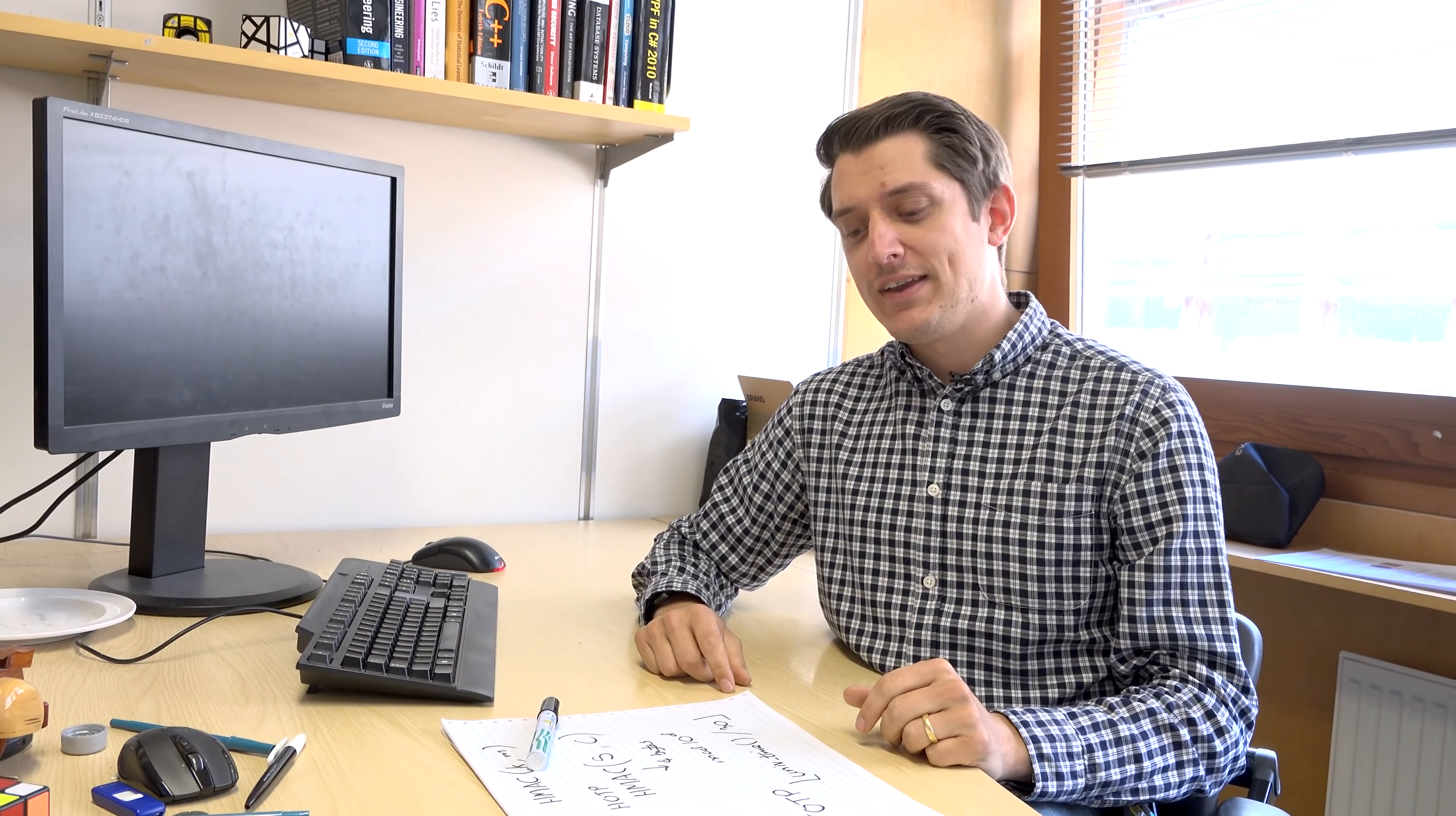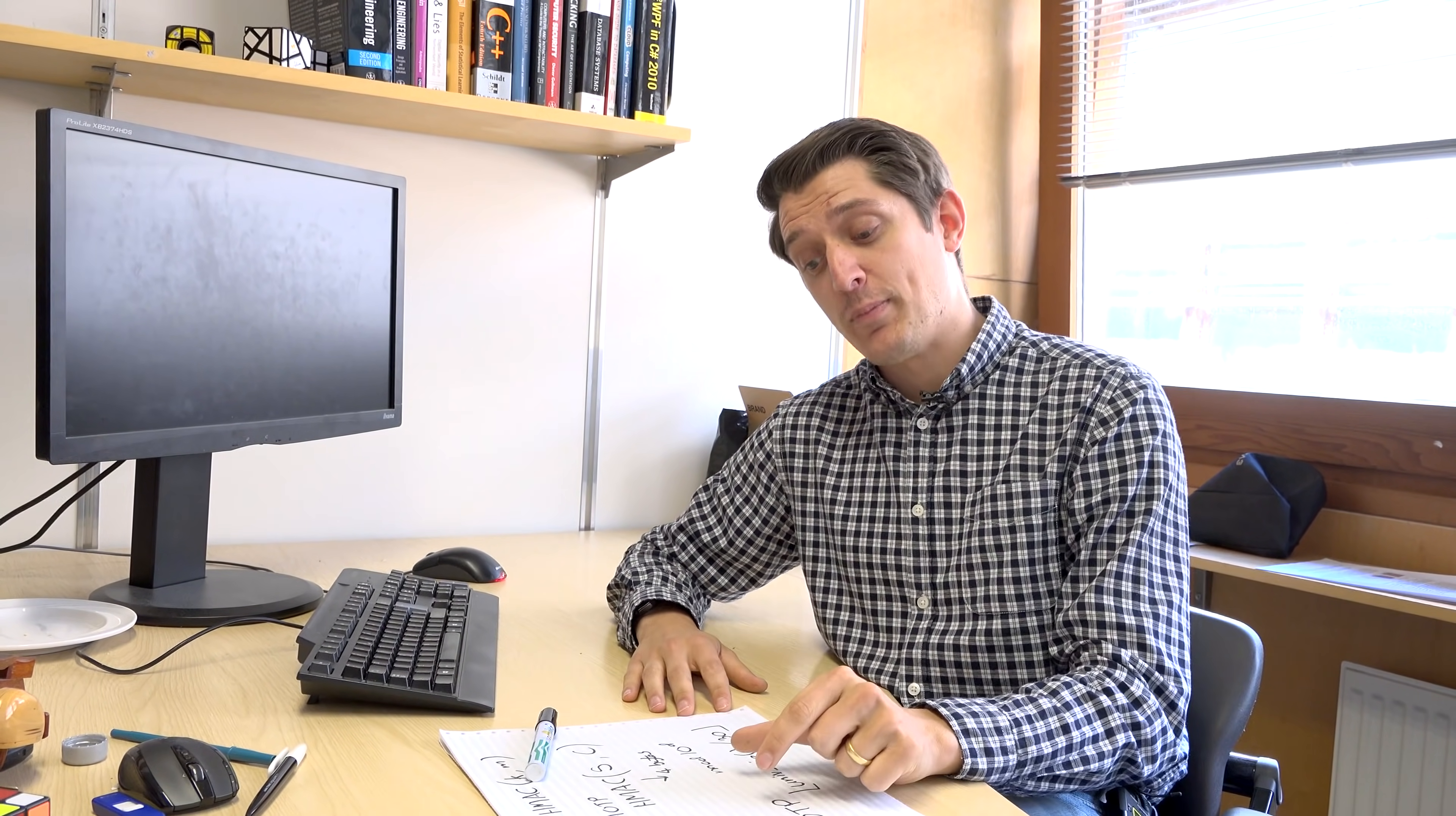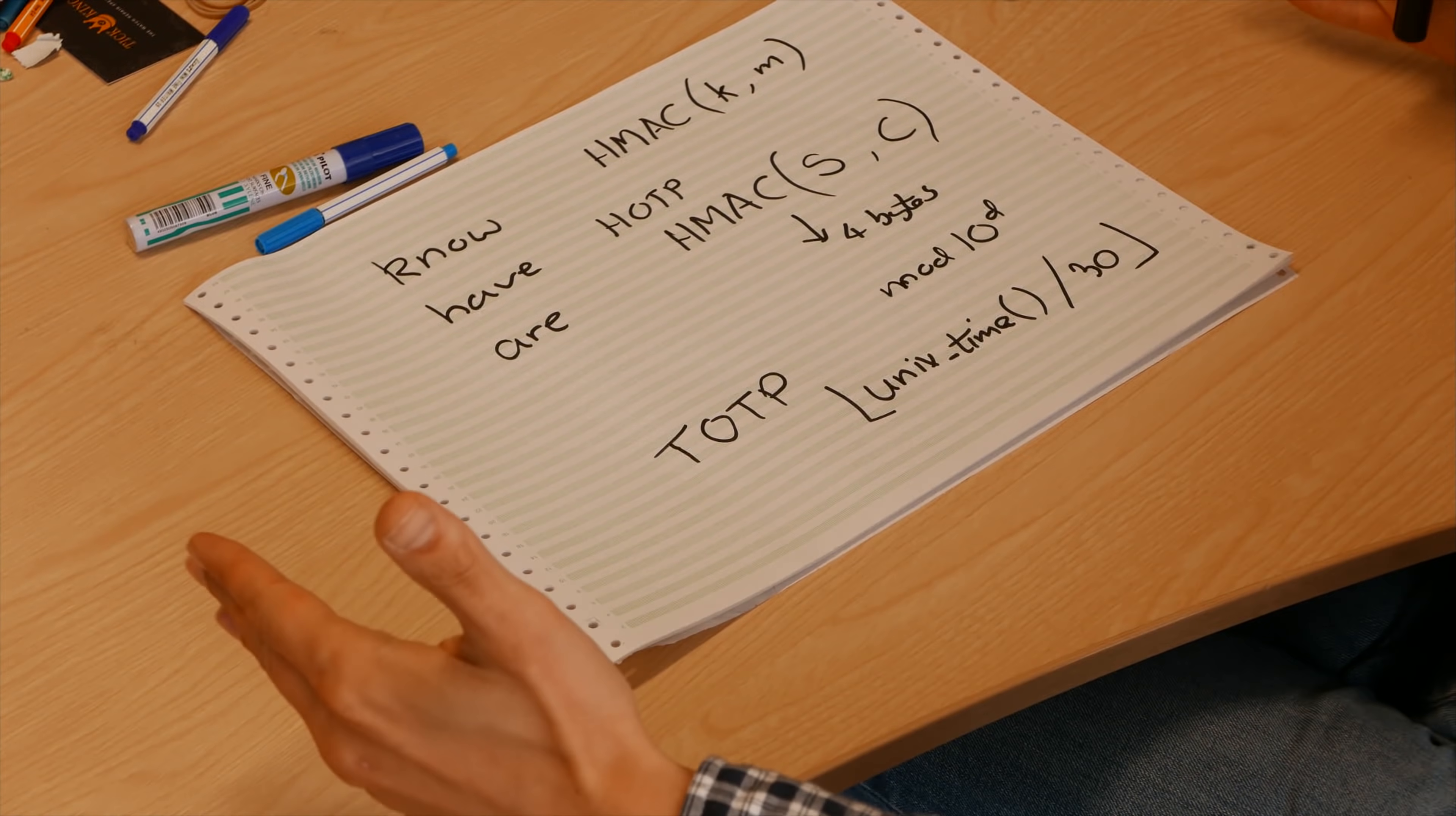In practice, in case they're out by a minute or two minutes, we might calculate on the server side C plus one, C minus one, just to see if they're close enough. For example, when I look at the password on my app, if it's about to expire I can still type it in because even if it's just expired it'll still be allowed. It's a security parameter of these systems: what the window size is.